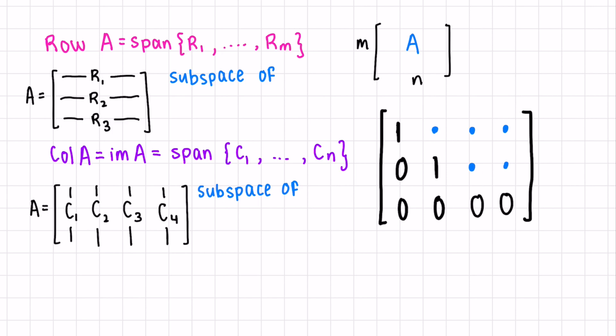The row space would be each of the rows. The row space is a subspace of R, well, how long is each of these rows? It has N components, so it's a subspace of R^N.